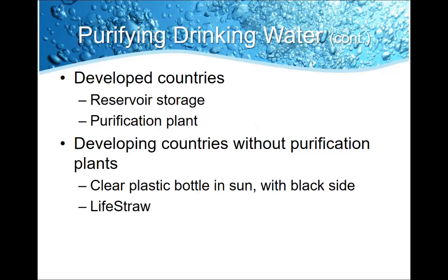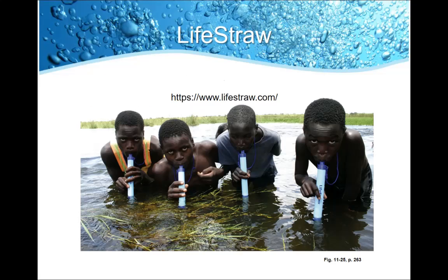These purification methods are especially important for developed countries that have reservoir storage and can utilize plant-based purification systems. But they're also important for developing countries that don't have these types of purification plants. A clear plastic bottle placed in the sun with black sides can help cook out and kill biologics inside. There's also the LifeStraw — a little tube with a filtration system built in that you can drink straight out of a river, and it removes the impurities.